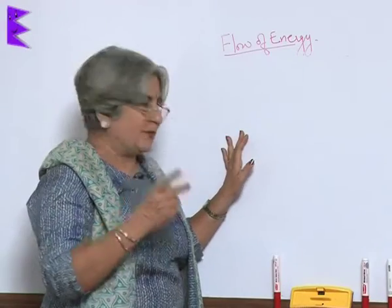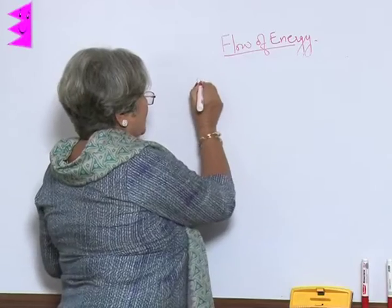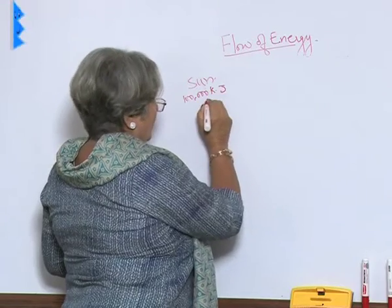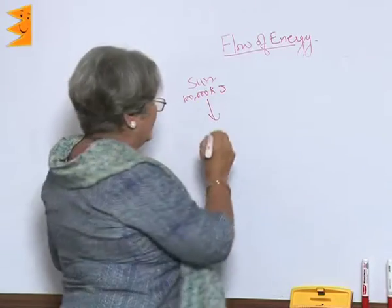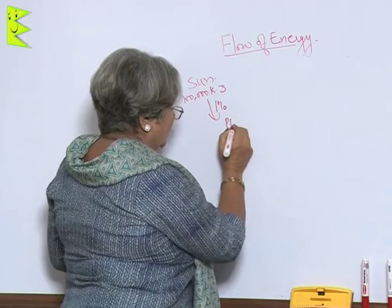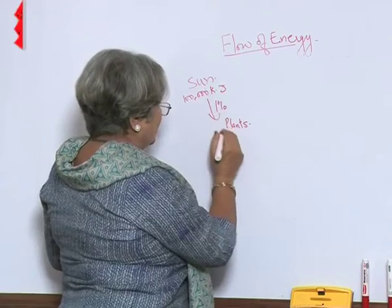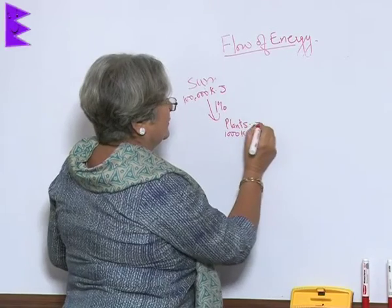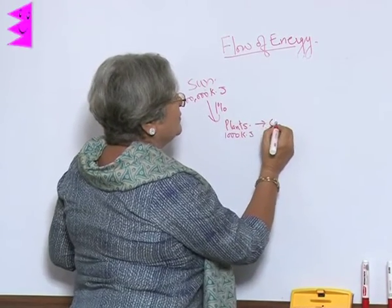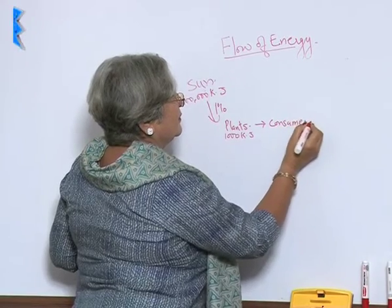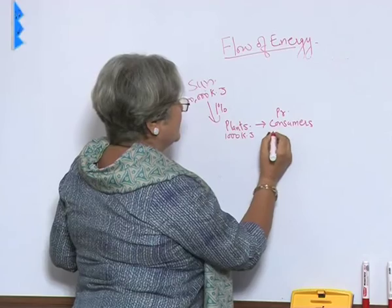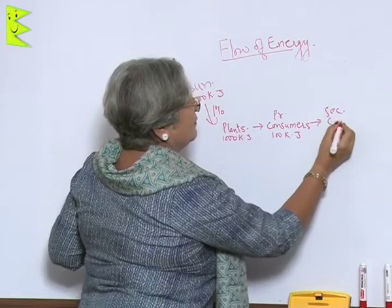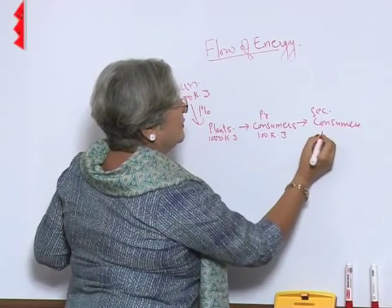Let us take a specific example. Say the sun has 100,000 kilojoules, but only 1% can be absorbed. So plants will get about 1,000 kilojoules. The primary consumers will get 100 kilojoules, and the secondary consumers will get 10 kilojoules.